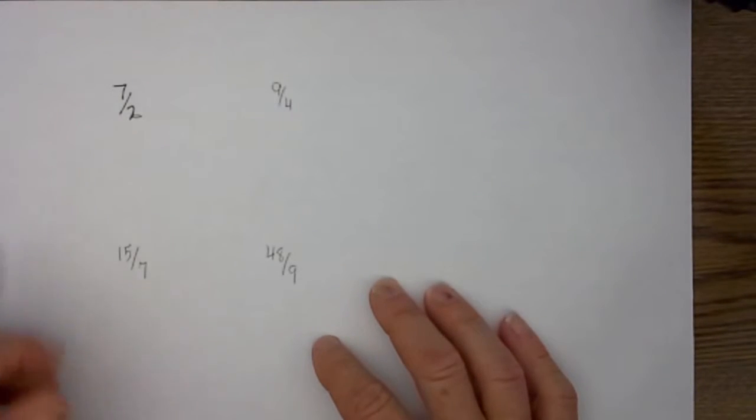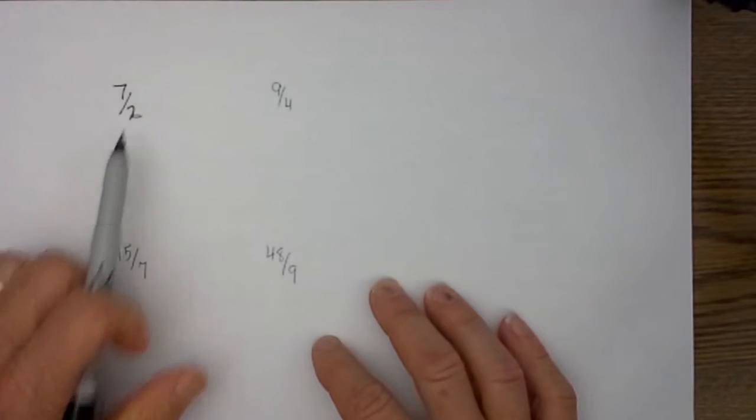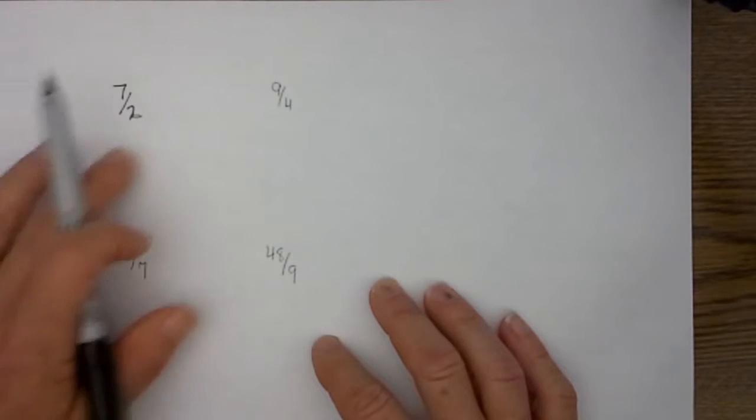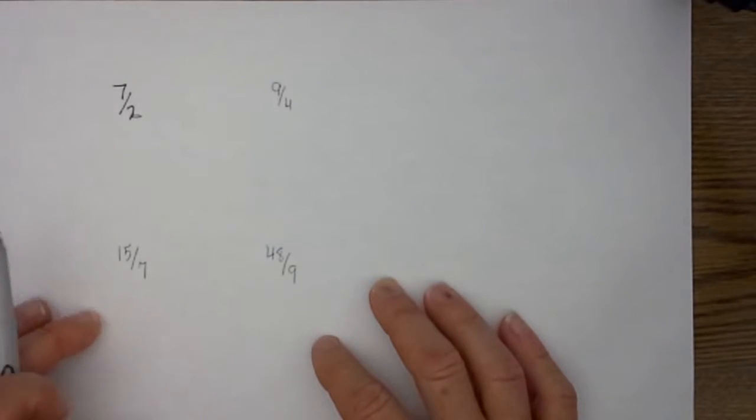An improper fraction is when the numerator is larger than the denominator. If you are tired of the traditional way of converting it into a mixed fraction, this may work. Basically here is what you do, and then I will work several examples and you will see, wow, this is really easy.